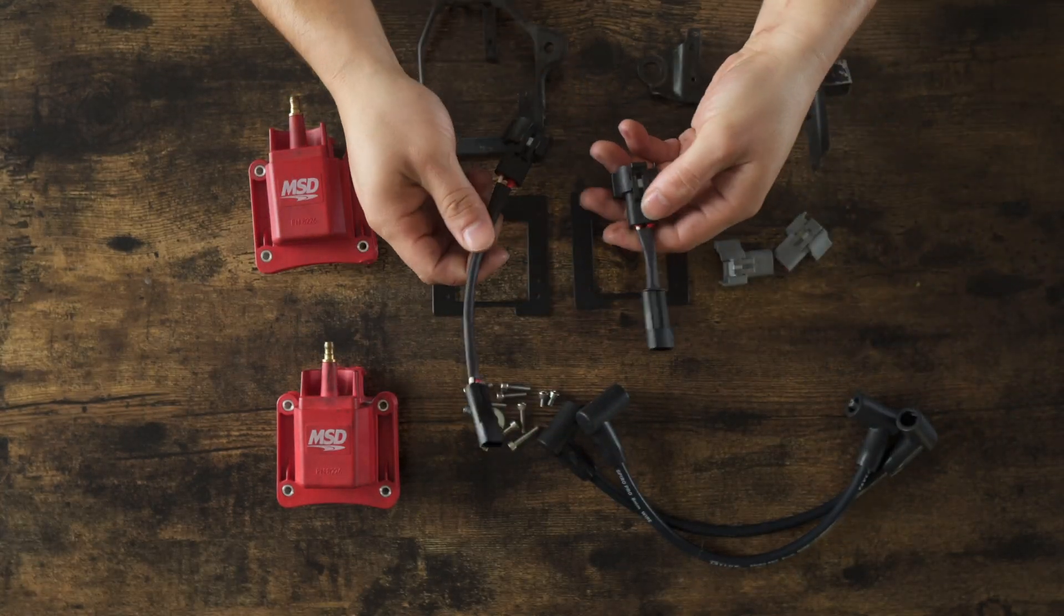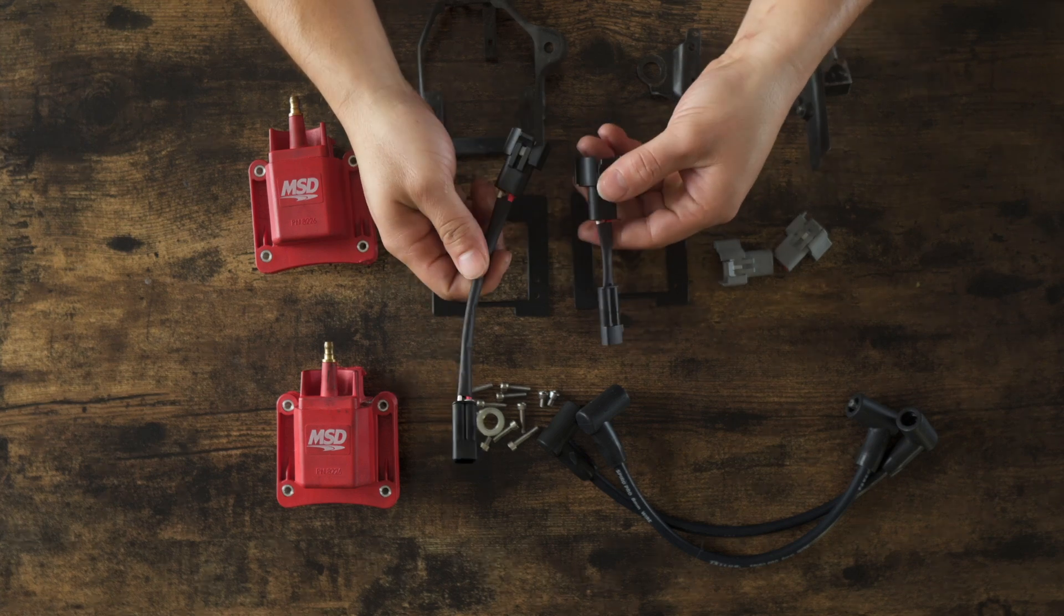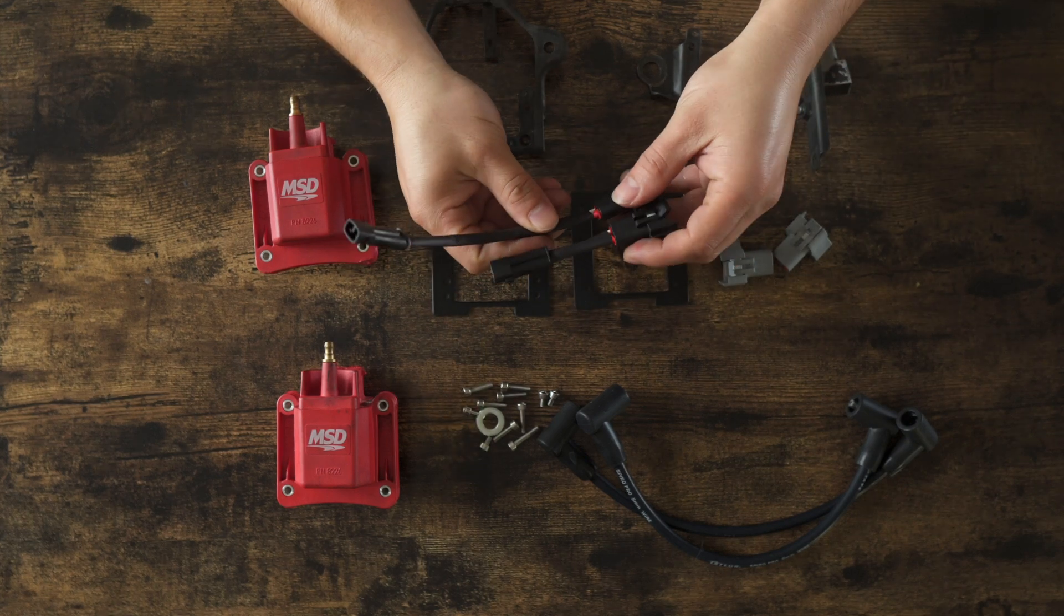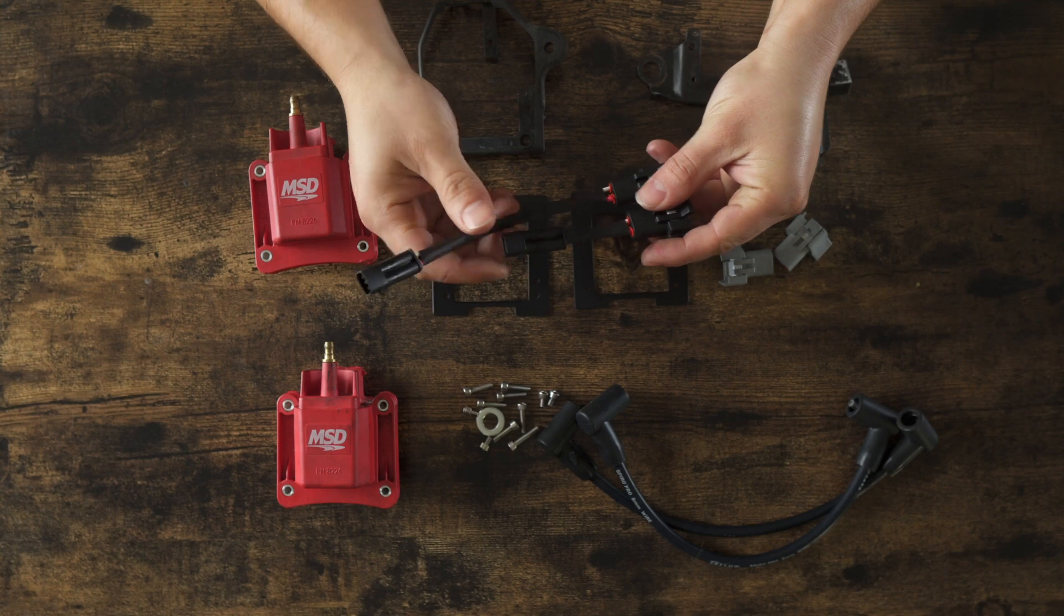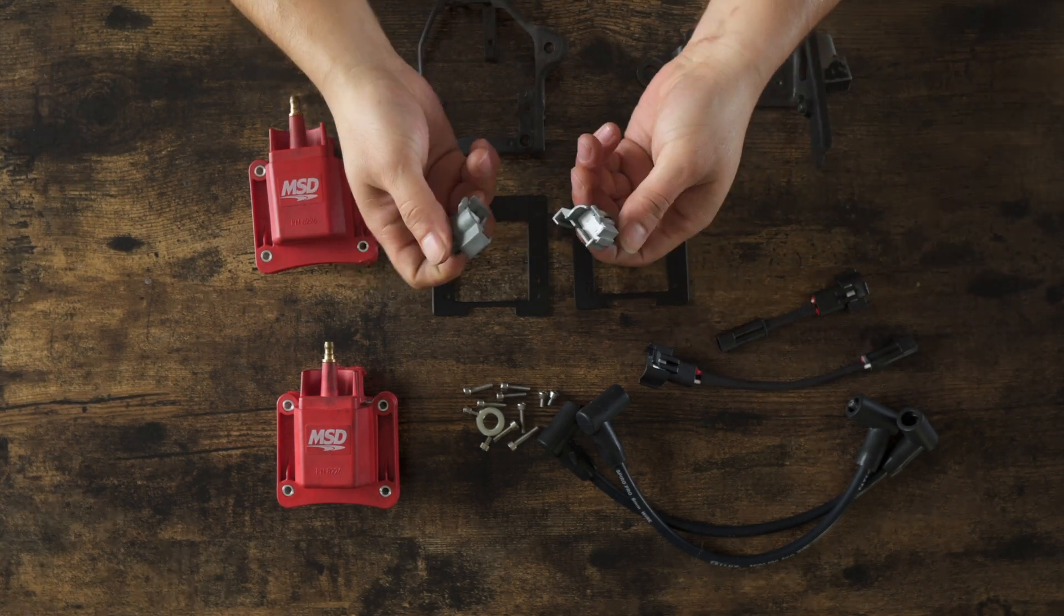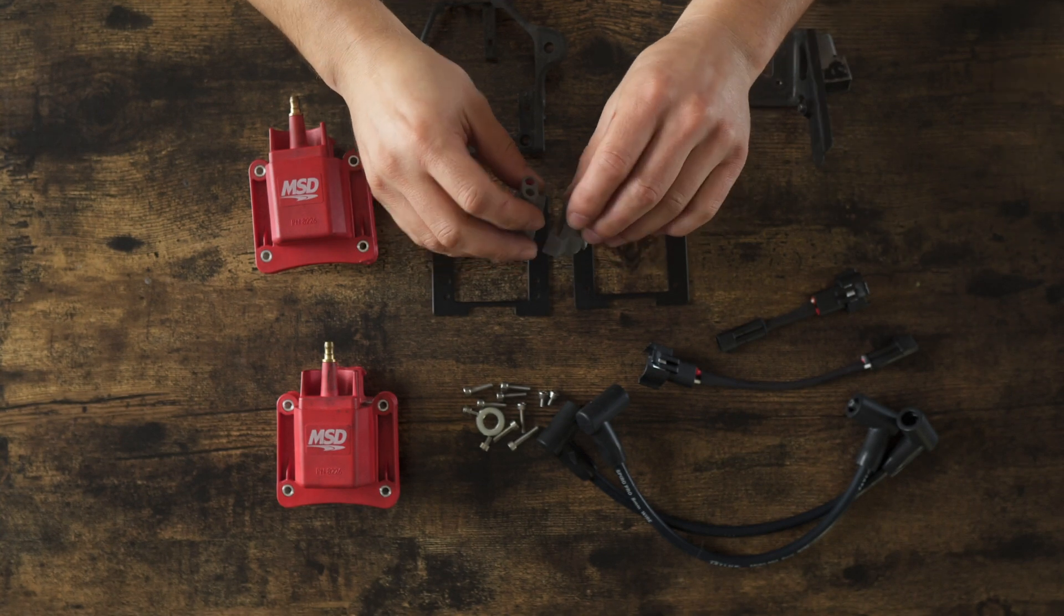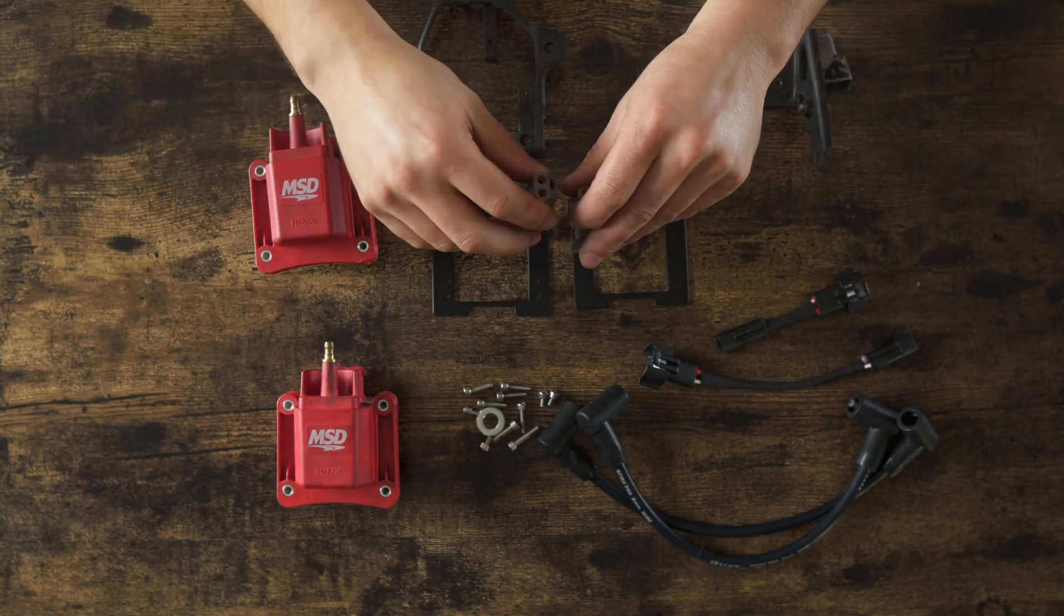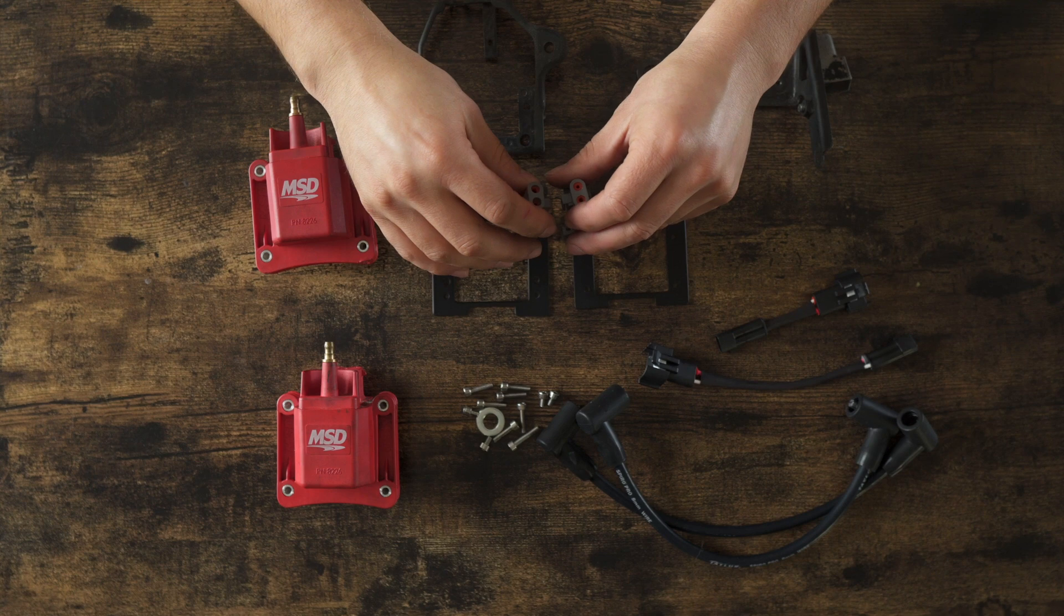You get two wires here with the black connectors, and they're going to be a different length, and that's going to be important because they don't go on the same side. You have these connectors here that are not used, but are used to cover the terminals of the ignition coils because there's actually four terminals instead of two.